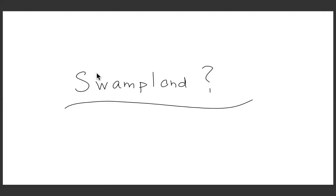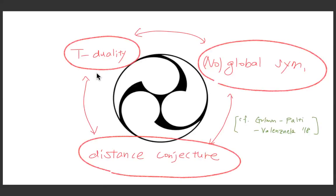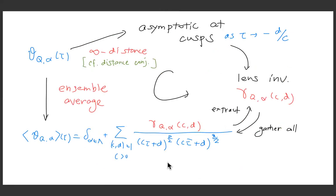Of course the question is the connection to Swampland. I don't have a full answer, but one thing is that there is a connection to the T-duality: it looks similar to an ensemble, and that is promoted to an emerging global symmetry in this example. You might expect there could be some connection to the distance conjecture, where an apparent global symmetry emerges at the infinite distance point in the moduli space. Could something similar happen here? Technically, something similar does happen.